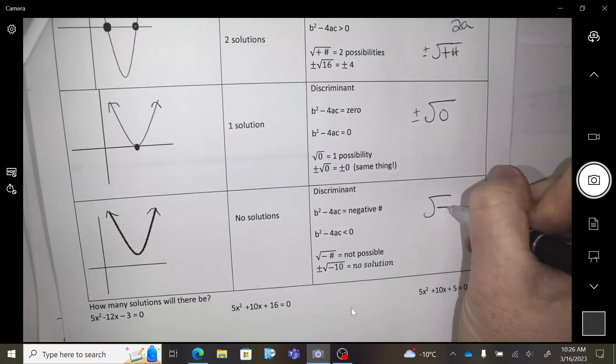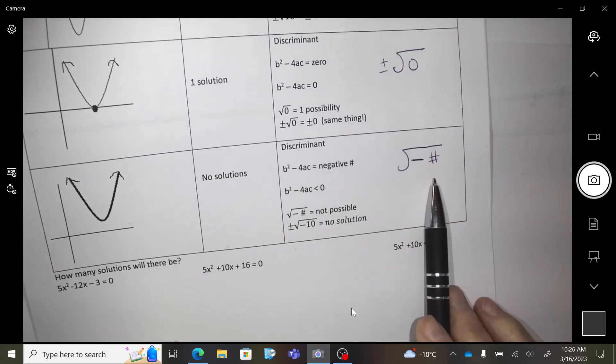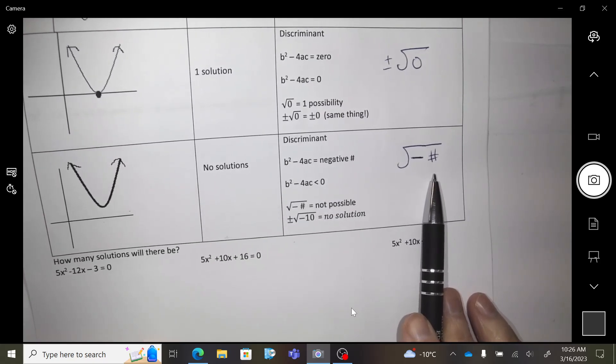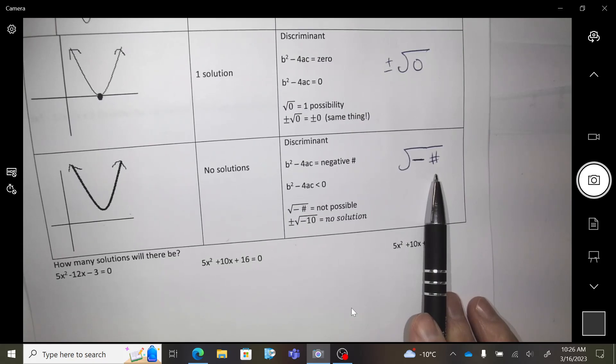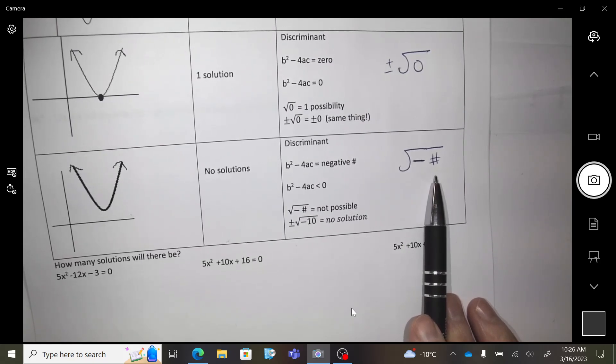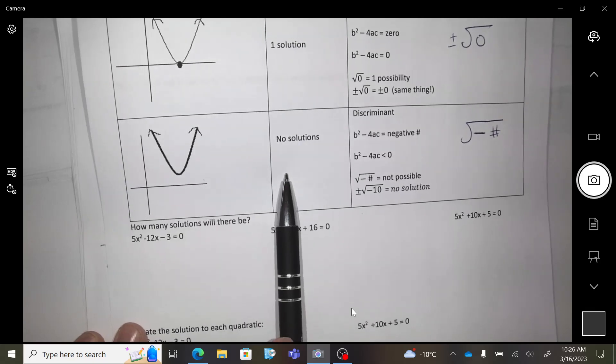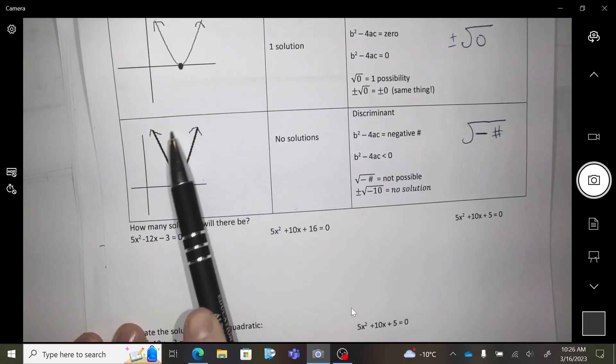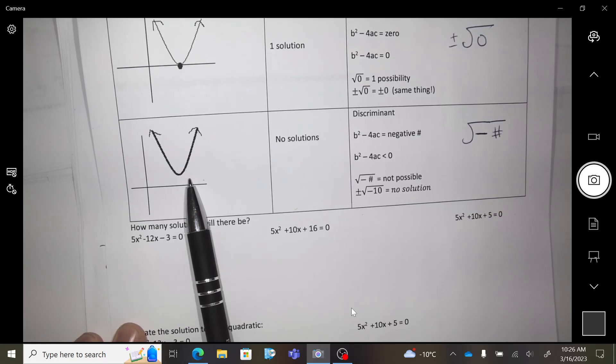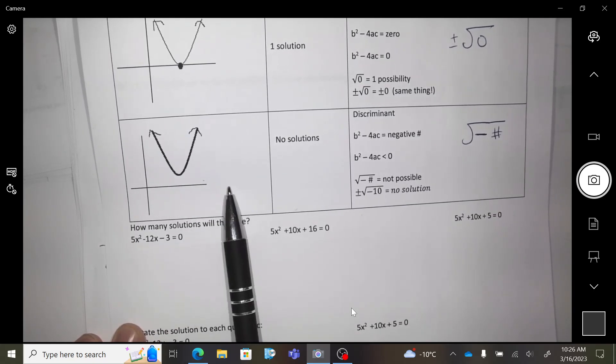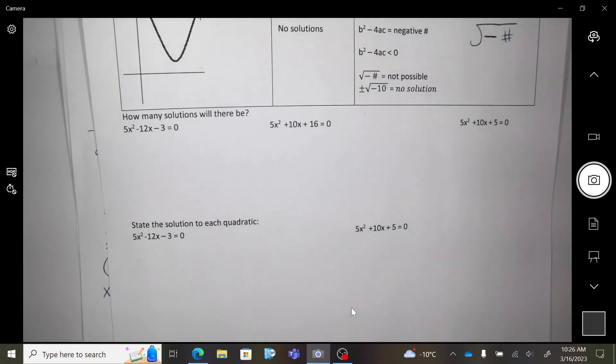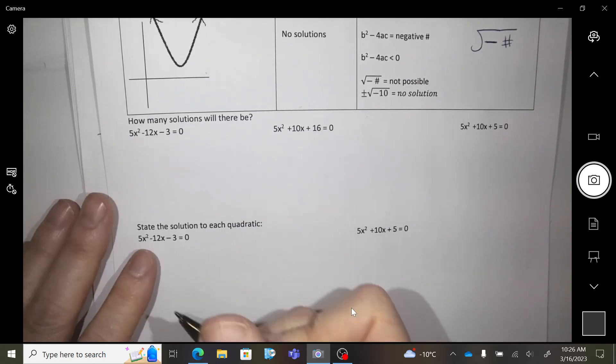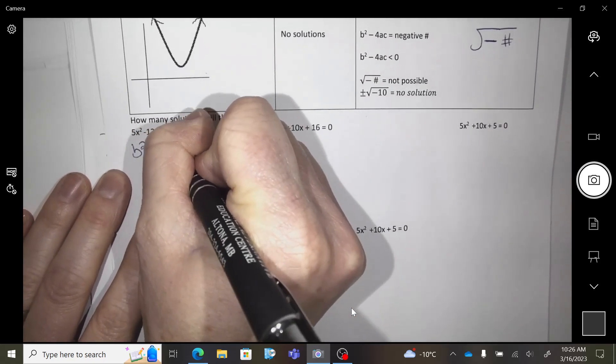And if the discriminant is a negative number, what do you know about square rooting negative numbers? Doesn't work. If you try it in your calculator, your calculator will say error. You can't square root negative numbers. So what would that look like? This. No solutions. Does this visually make sense? Is this parabola ever going to hit the x-axis? No. So how many solutions are there going to be?